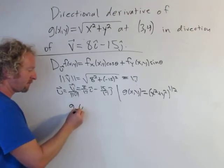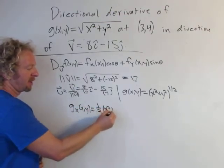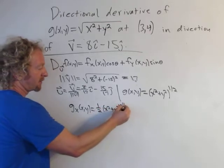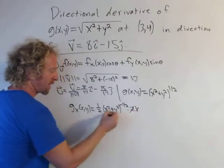Alright so now when we take the partials we bring that one-half down and we use the chain rule. So little g sub x of xy is one-half. Don't touch the inside. And then you get a negative one-half here times the derivative of the inside. The inside function here is just going to be 2x. The 2's cancel.